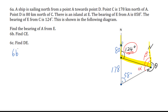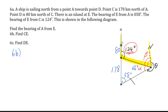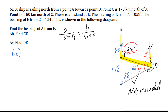Let's go to 6B: find CE. CE is this segment in the diagram. We already know alpha is 66 degrees. Since 66 degrees and 58 degrees are not included angles, we have to use the sine rule. For the sine rule: A over sine A equals B over sine B — corresponding side over corresponding angle.